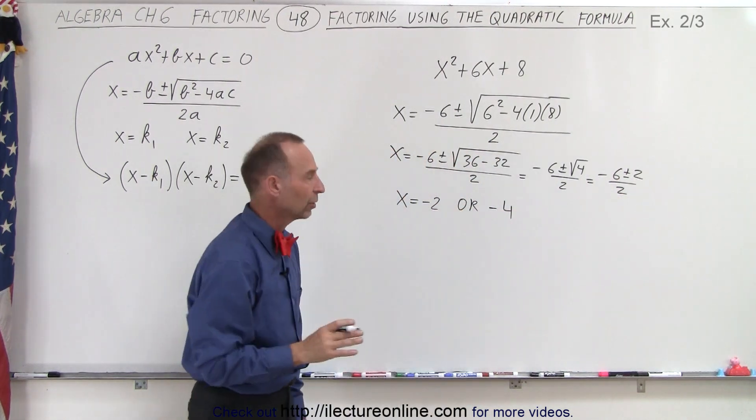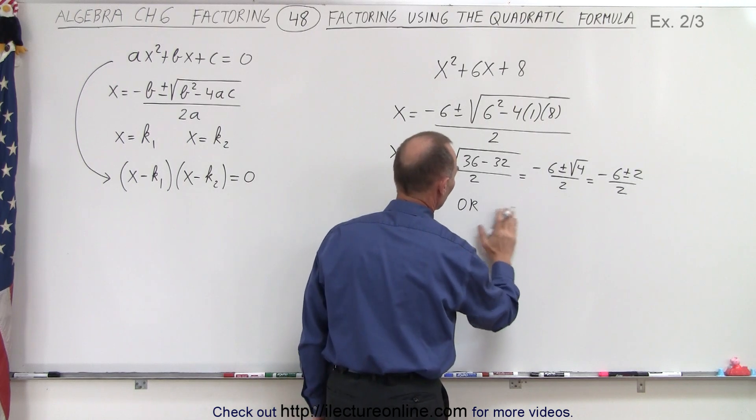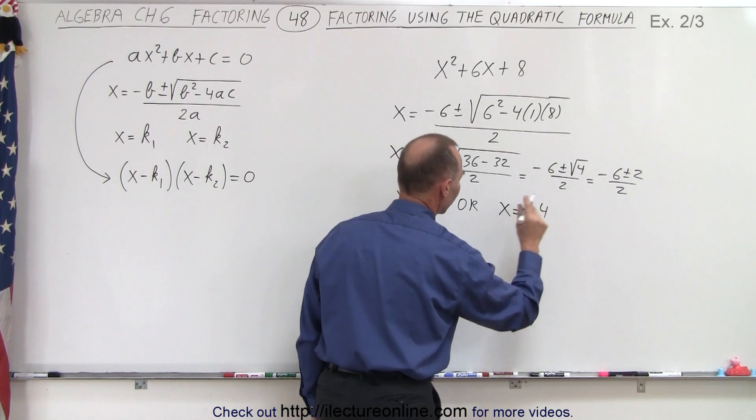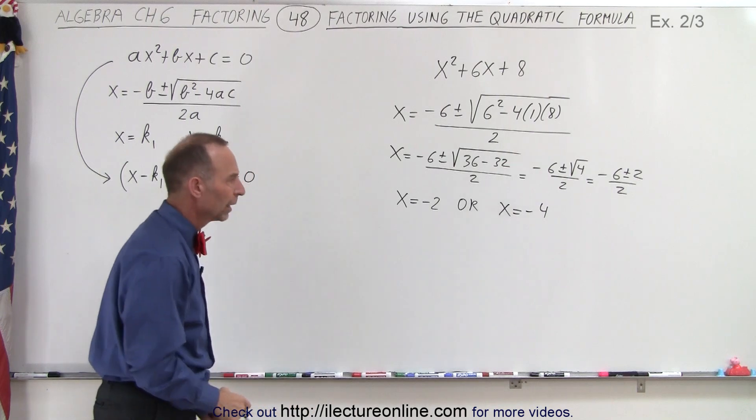So we have two possible values for x, and let me just write this as x equals minus 4. It's a better form.